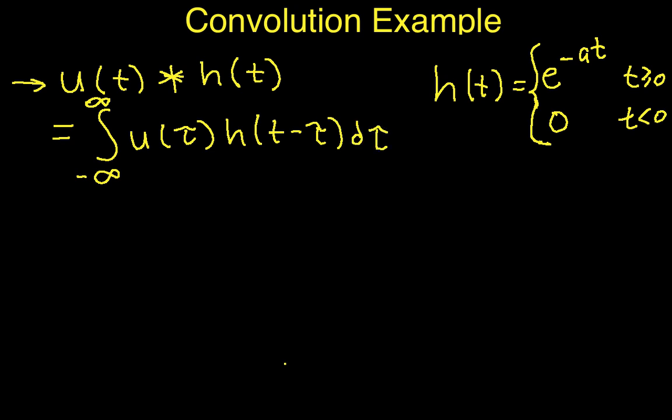So again, in order to work this out, you have to remember that the variable of integration here is tau, and t is a parameter that doesn't come into the integration. By the time we complete the integration, we'll have something that's a function of t because we will have integrated all the tau's out.